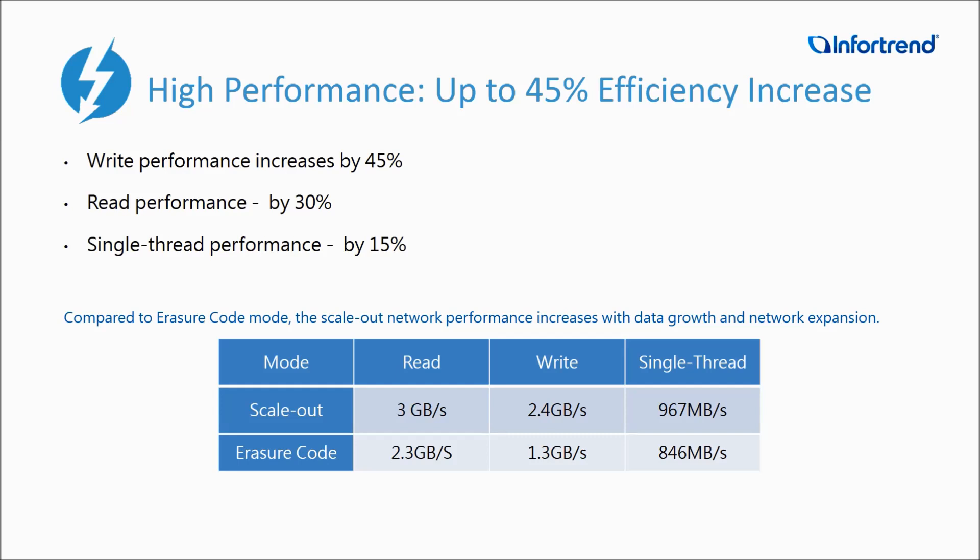Finally, the initial deployment cost is low, because in scale-out Distributed Mode, you can get a fully operable system by deploying just a single storage node. Not only that, CS also offers the flexibility of future expansion, meaning that companies can expand performance and capacity at any time according to application requirements, with an increased 30% capacity usage rate.